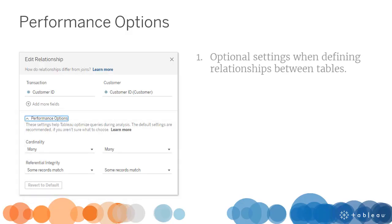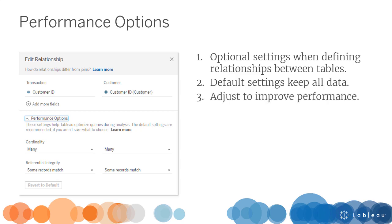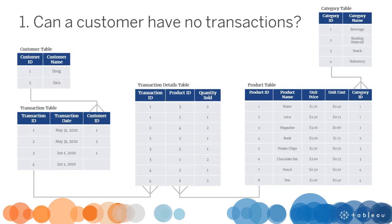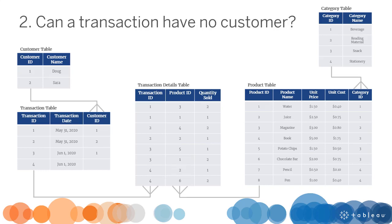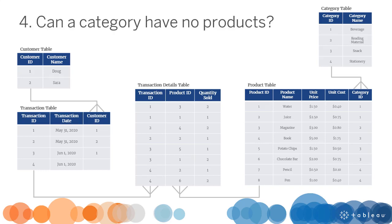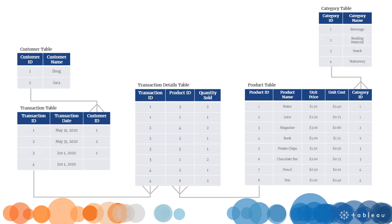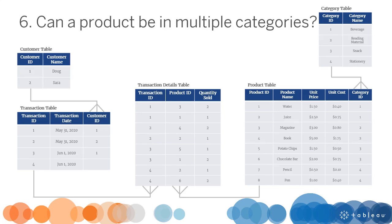Performance options are optional settings we can specify when defining relationships between tables. The default settings ensure that no data goes missing in our visualizations, but we can adjust them to improve performance. We define the settings based on our data model diagram and our business rules. Consider the following questions: Can a customer have no transactions? Can a transaction have no customer? Can two customers split a transaction? Can a category have no products? Can a product have no category? Can a product be in multiple categories? Since Tableau Desktop cannot assume the answers, it must consider all options valid. Let's define our business rules to maximize query performance.